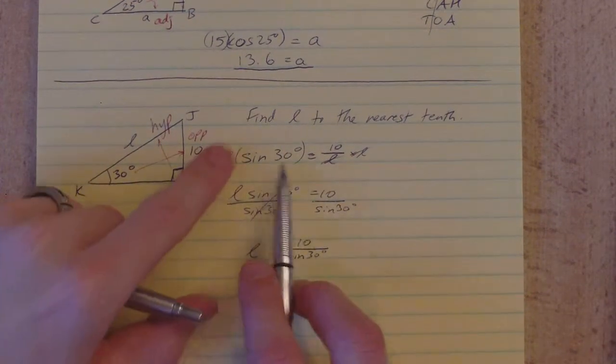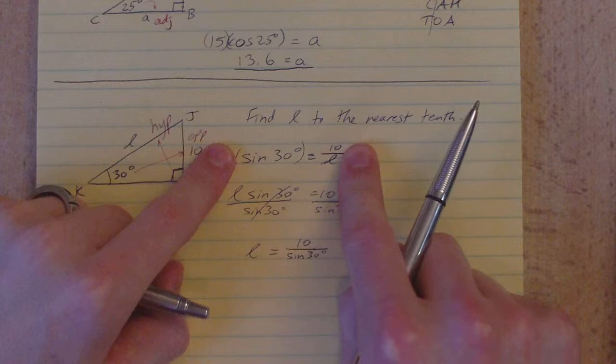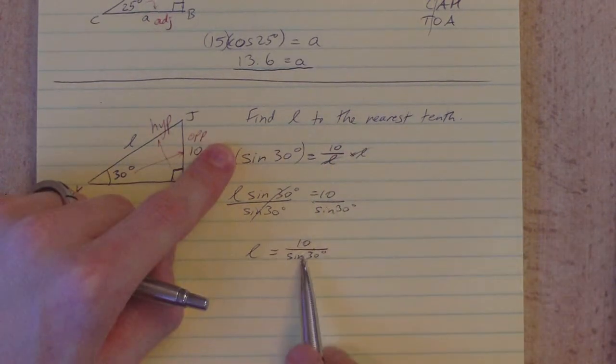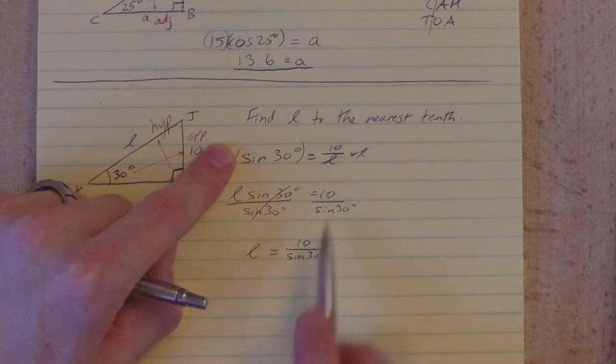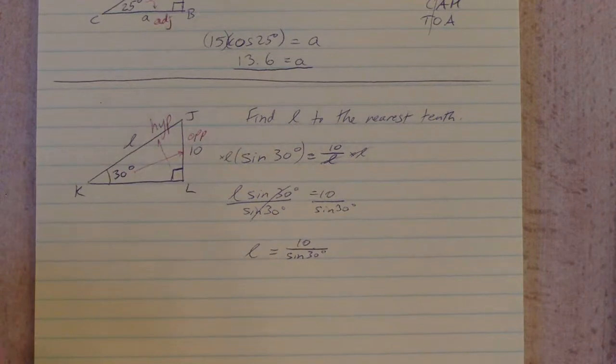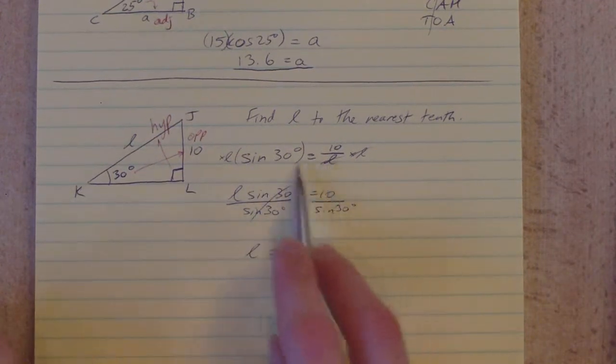Look what happened here. We started off with sine 30 equal to 10 over L. And we're left with L equals 10 over the sine of 30. The L and the sine of 30 end up just kind of switching places there. That'll always happen if you have the L in the denominator. There are other ways to do it. That's just kind of a shorthand that I use.